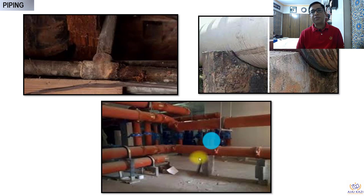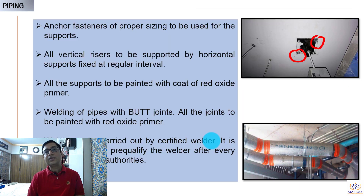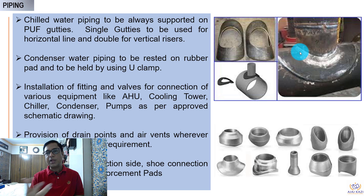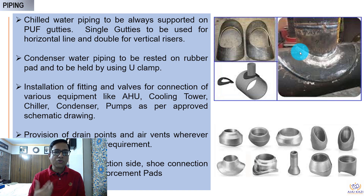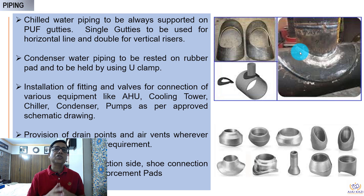Looking at some photographs, you can see bad installations for piping — it looks horrible, showing bad workmanship. Anchor fasteners play an important role; always ensure you have additional fasteners to handle any problems. If a fastener is designed to take the load and there is only one fastener, it is important to provide another so that if the first fails, the second takes care of it. Chilled water piping is supported on gutties — single gutties for horizontal and double gutties for vertical pipes. Clamps are used to hold pipes; for condenser water piping, normal clamps are used, but for chilled water piping, specifically designed clamps are used.